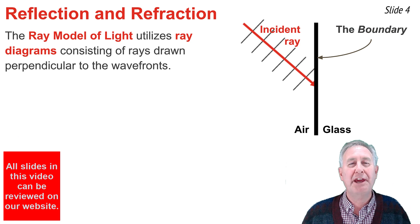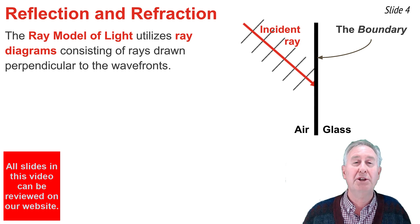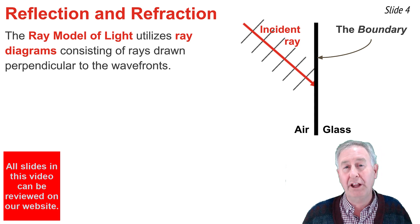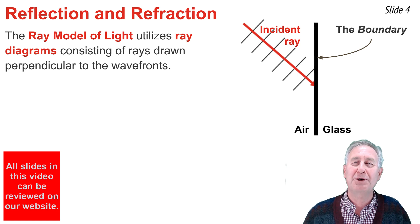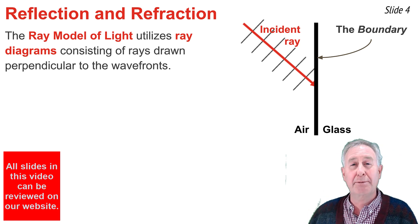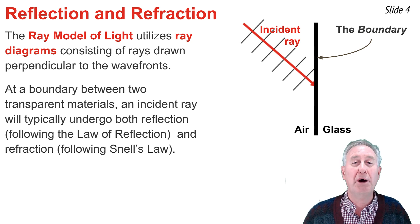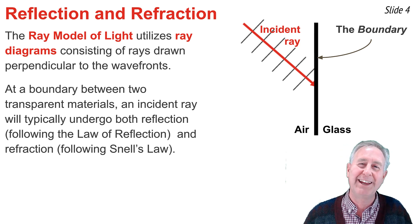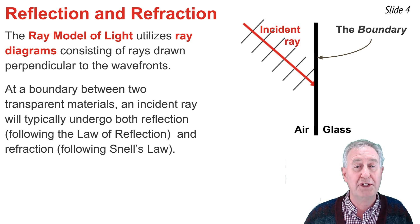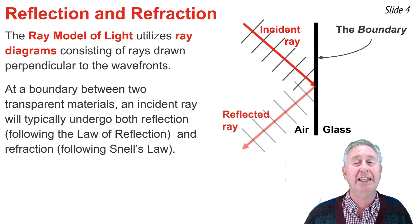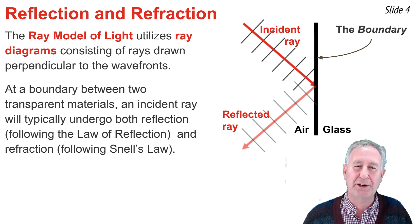The lessons learned about boundary behavior of waves can and should be applied to the behavior of light waves at a boundary, though we typically use a ray model of light. In such a model, a ray diagram is employed in which a ray is drawn perpendicular to the wave fronts approaching the boundary. Here we see a ray diagram showing an incident ray in air approaching the boundary with glass. A portion of its energy reflects off the boundary and remains in the air, and a portion transmits across into the glass. The law of reflection states that the reflected ray is an equal angle from the normal line as the incident ray.